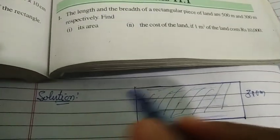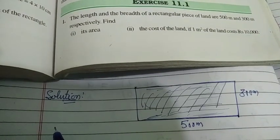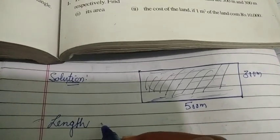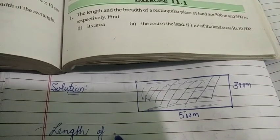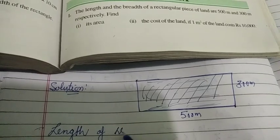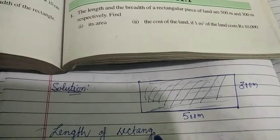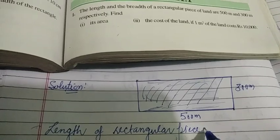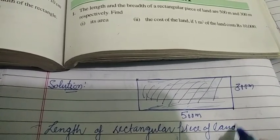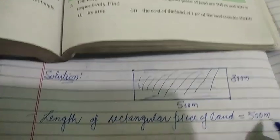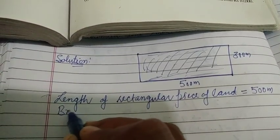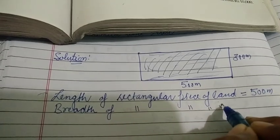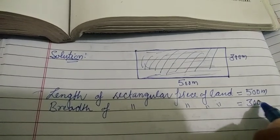Let us find out what has been asked. First is to find the area. Write down: length of rectangular piece of land is equal to 500 meters. And now we will write the breadth: breadth of rectangular piece of land is given as 300 meters.